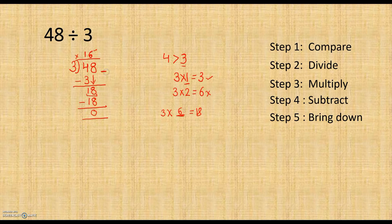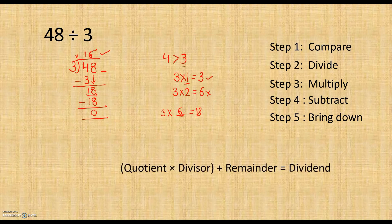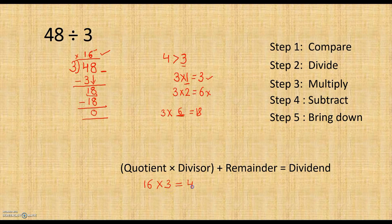Now we don't have any other digit in the dividend, so our answer is 16. Let's check if our answer is correct. For checking the answer we have one formula: multiply the quotient with the divisor and then add the remainder — if the result equals the dividend, then the answer is correct. Here quotient is 16, divisor is 3, so 16 multiplied by 3 gives 48. Our remainder is 0, so adding 0 gives 48. This equals the dividend, so our answer is correct.